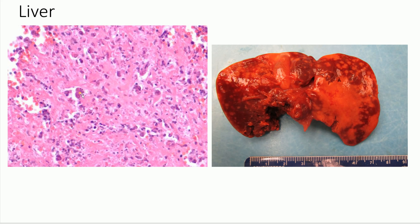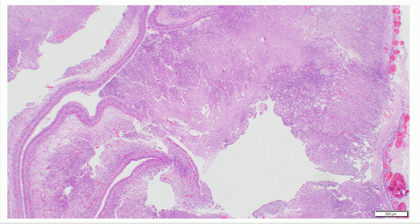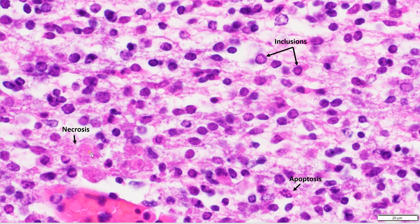We also notice that within some of these cells, the nuclei appear to contain little inclusions. Moving on to the brain tissue — I don't have a gross photograph because the brain was very soft and diffluent — but on low power microscopy, there is increased cellularity in the cortex. On higher power, we see individual cell necrosis, larger areas of necrosis, some apoptosis, and importantly, some cells appear to have little inclusions in their nuclei. When you see nuclear inclusions, you want to consider a viral infection in your differential.